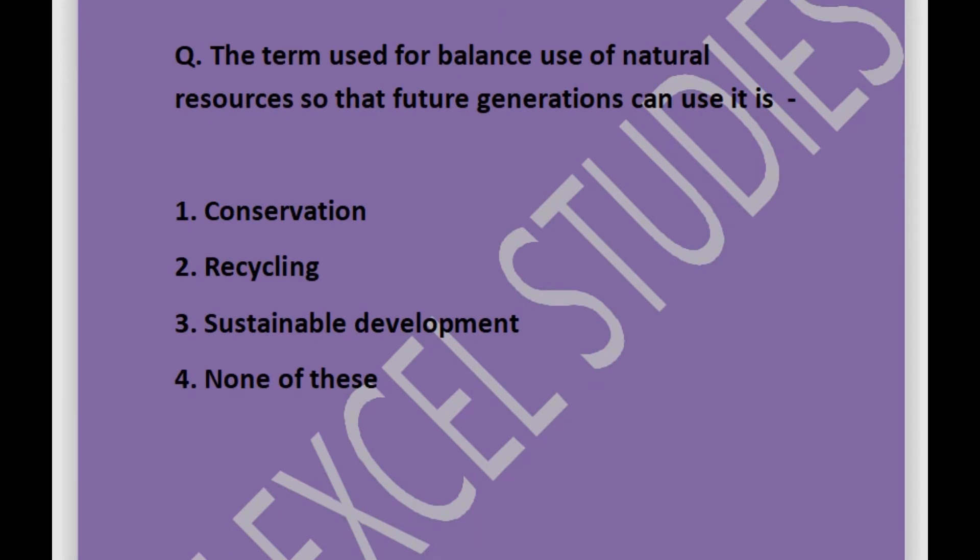Next question: the term used for balanced use of natural resources so that future generations can use them is — options are conservation, recycling, sustainable development, or none of these. Answer is sustainable development.